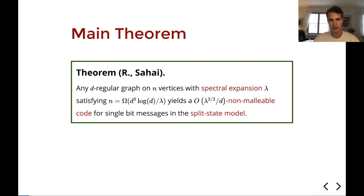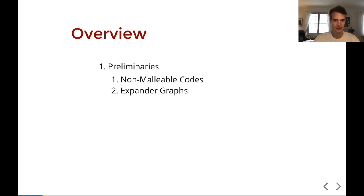There's a bit to unpack in this theorem and that's what we will start out by doing. We're going to discuss spectral expansion, non-malleable codes, split-state model, and later you'll also learn how to turn a graph into a code. This is the overview. There are the preliminaries, we'll do some context of the results, then we'll look at a proof of the main theorem and then in the end we'll discuss future work.